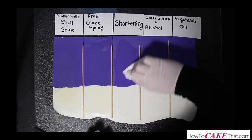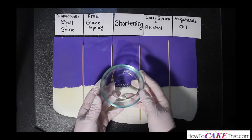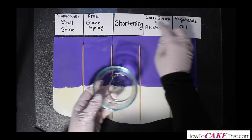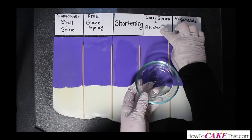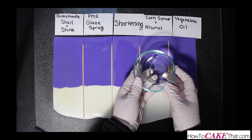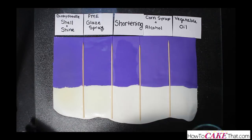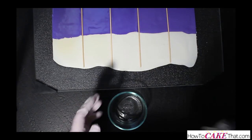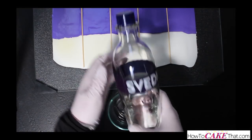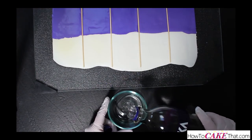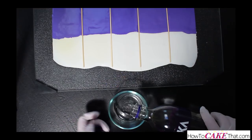The next glaze I am using is the corn syrup and alcohol recipe. I already have a little corn syrup in my dish, so I just need to add a little vodka to make the glaze. I am adding enough vodka so that it is about equal with the amount of corn syrup that is already in the dish.